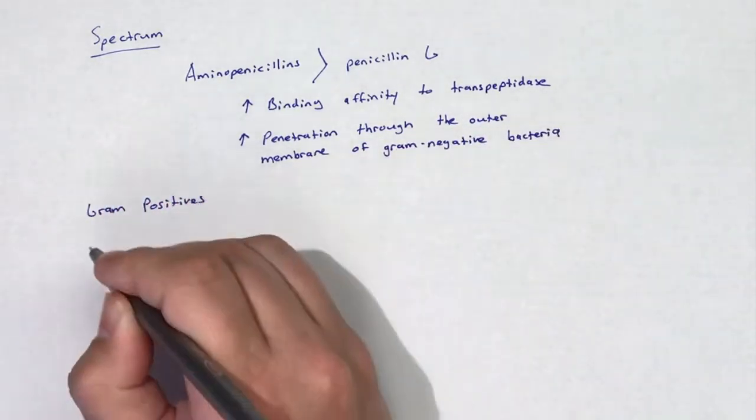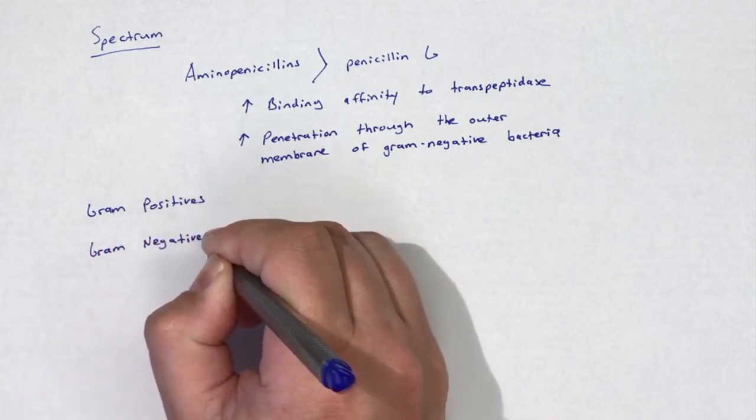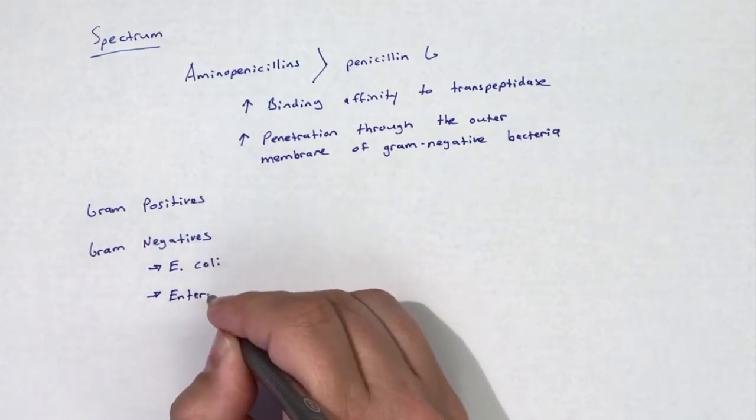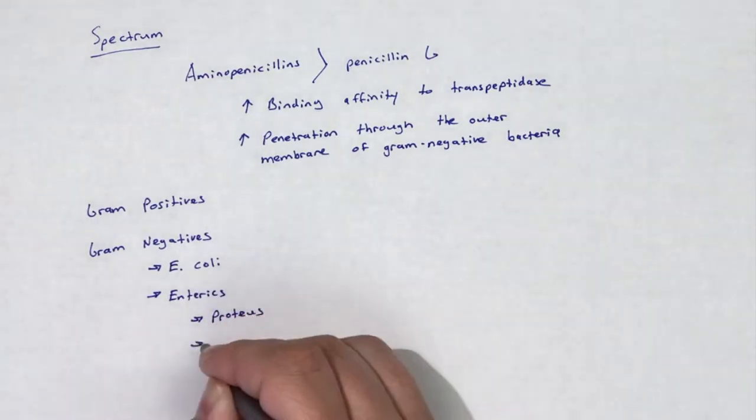Aminopenicillins cover gram-positives and some gram-negatives, including Escherichia coli and other enterics, including Proteus, Salmonella, and Shigella species.